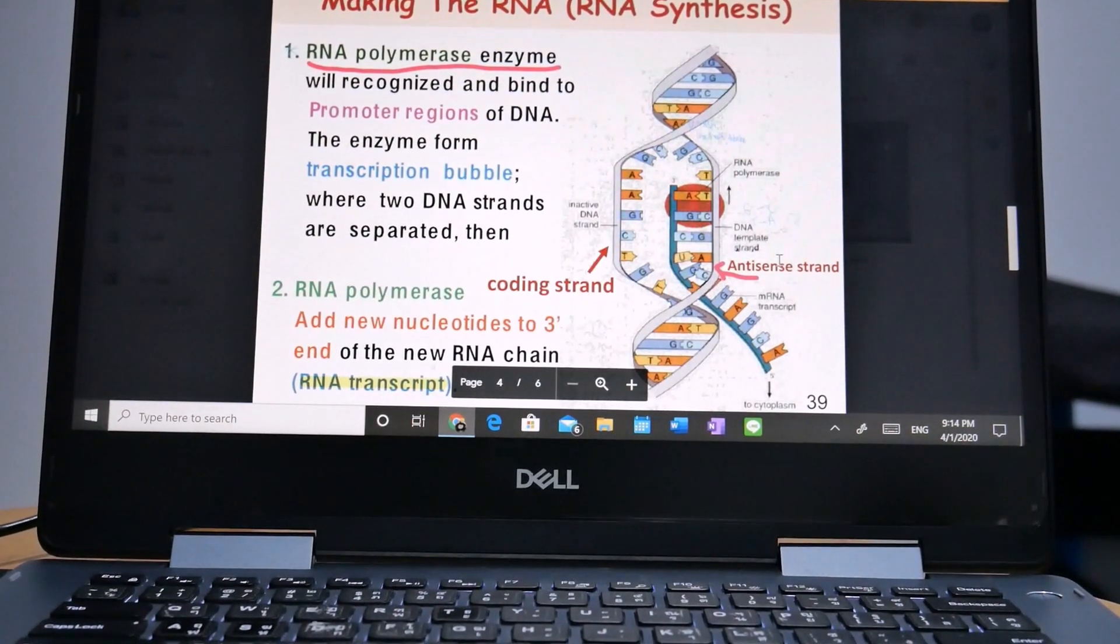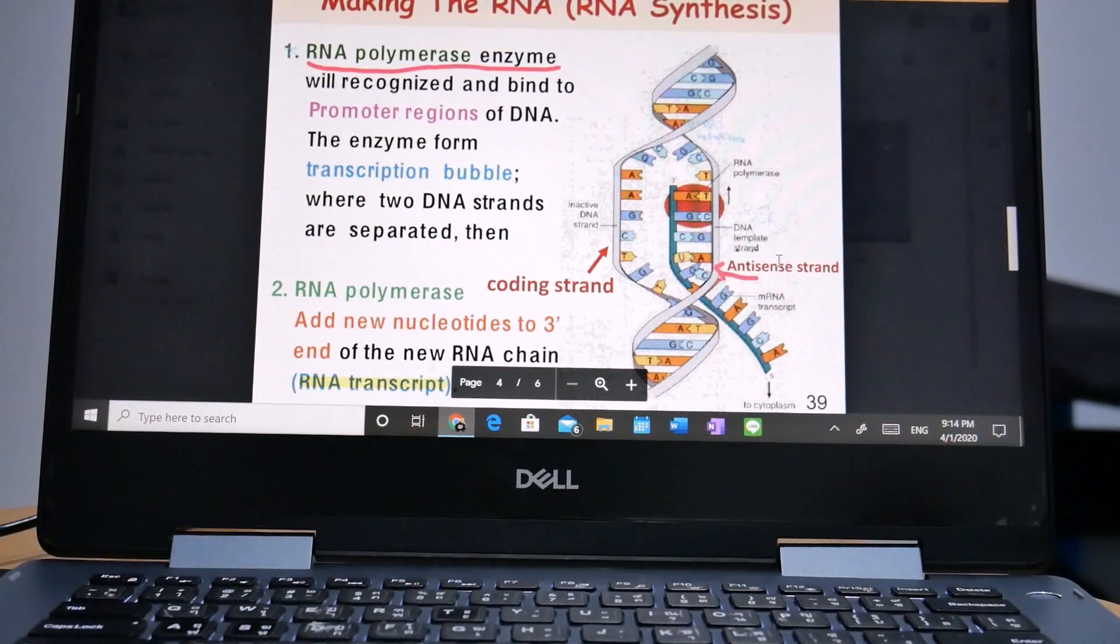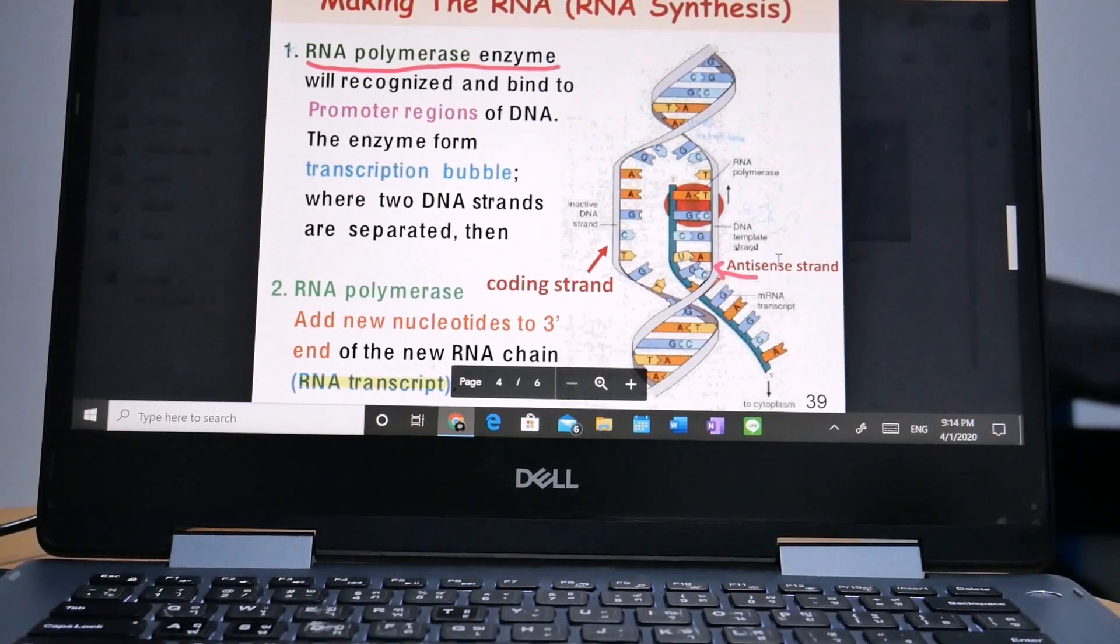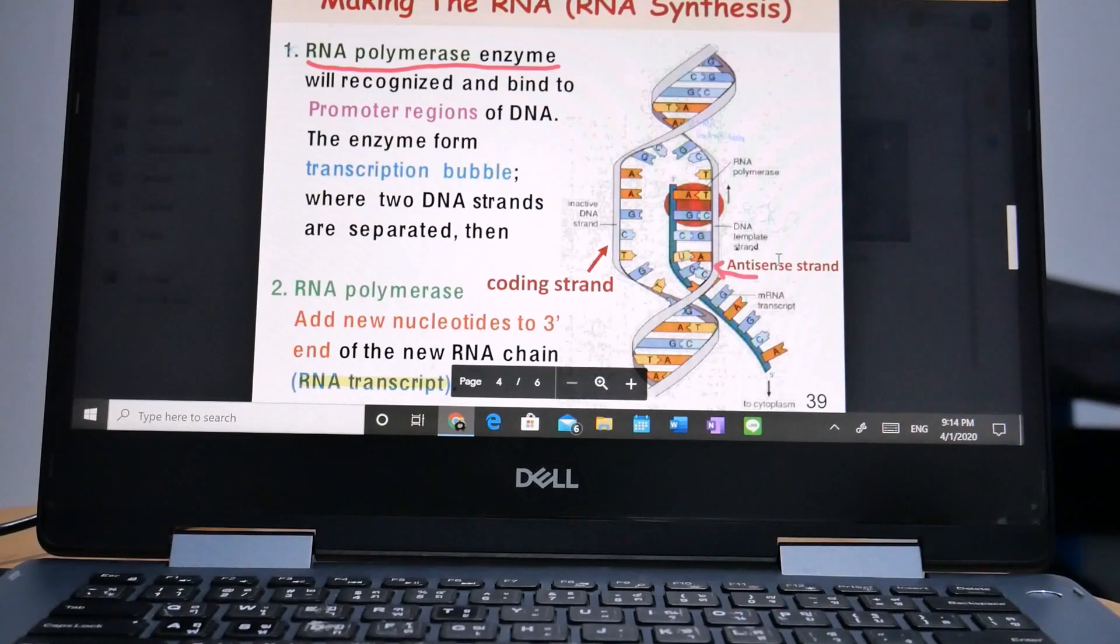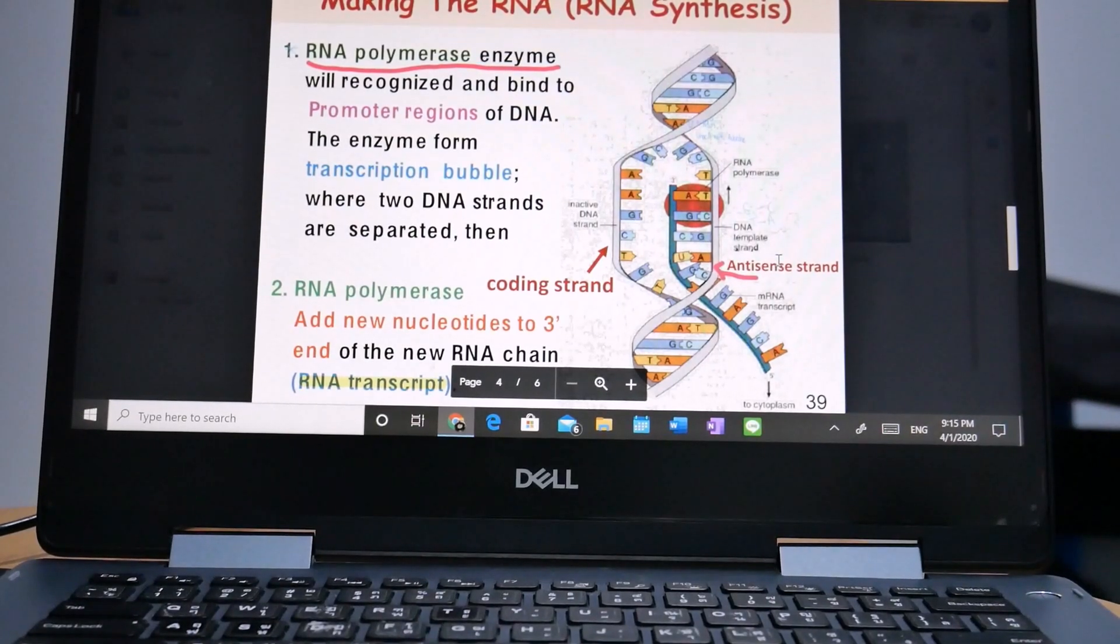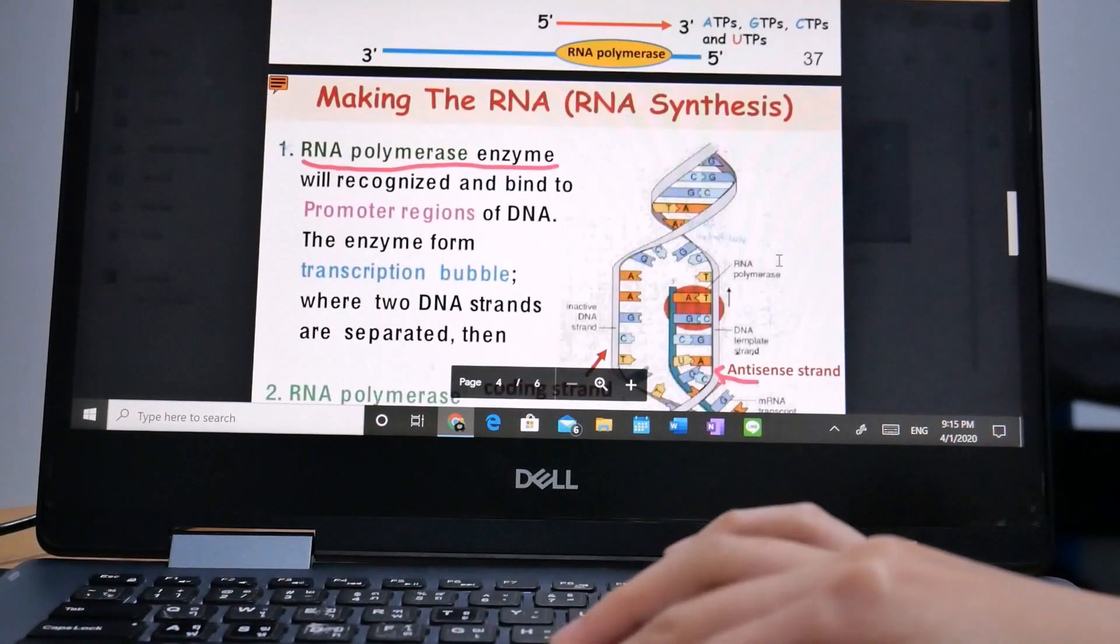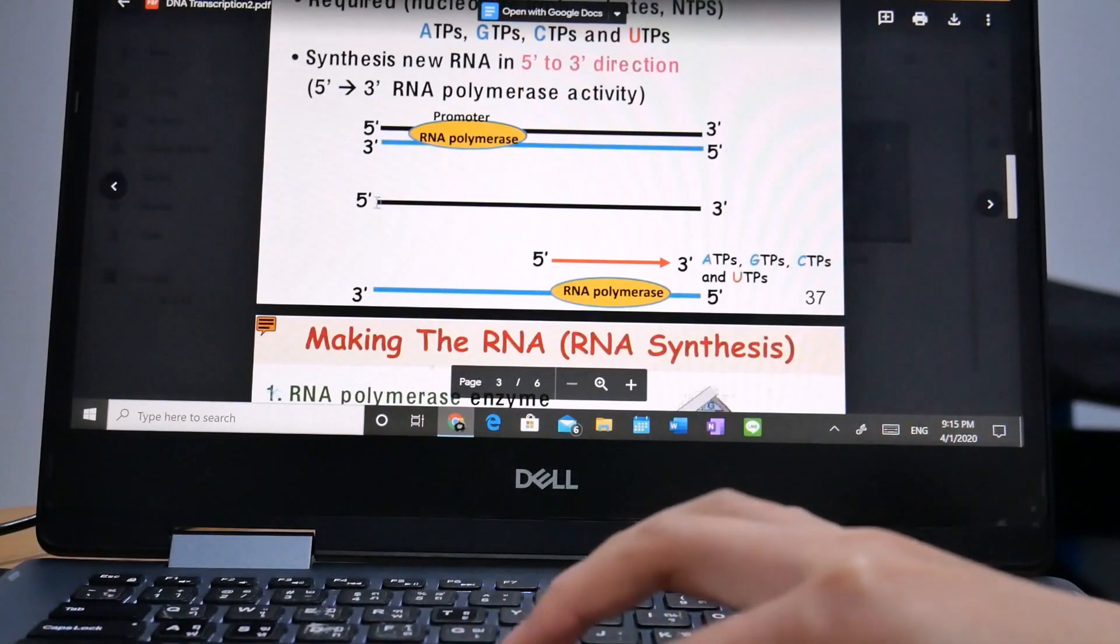Elongation. One strand of DNA, the template, acts as a template for RNA polymerase as it reads this template one base at a time. The polymerase builds an RNA molecule out of complementary nucleotides, making a chain that goes from five prime to three prime.